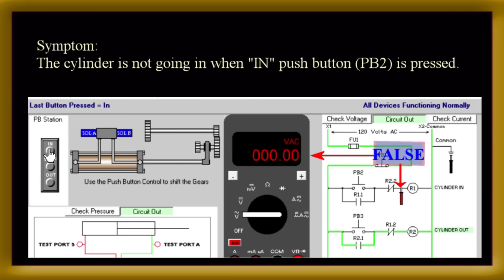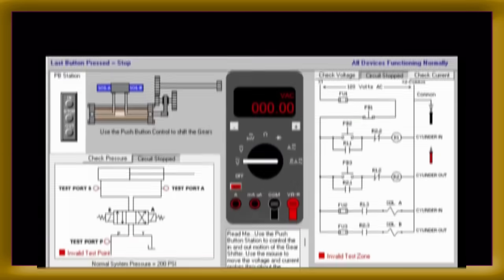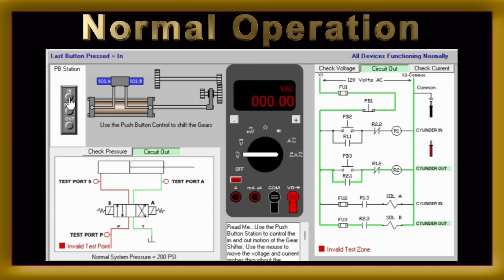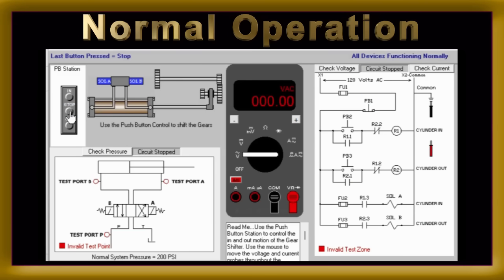The false, zero-volt reading after the normally closed contact for relay 2 shows us R2 is stopping R1 from turning on. In the previous example, the issue was just an operator error. As we discovered with this circuit, the operator must press the stop push button first to turn off the cylinder out relay, before pressing the in push button.